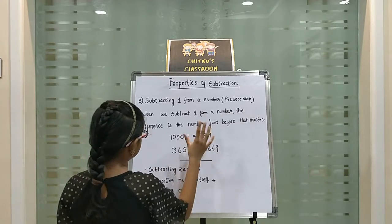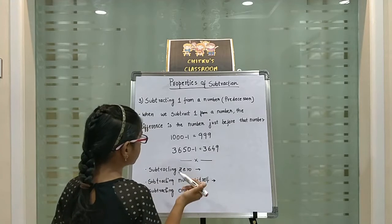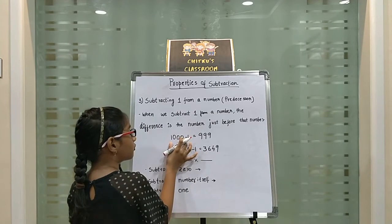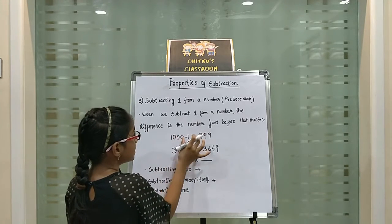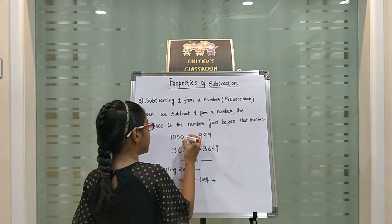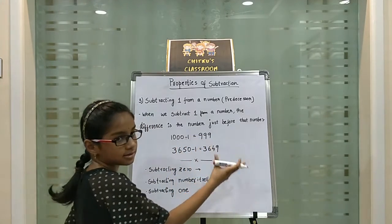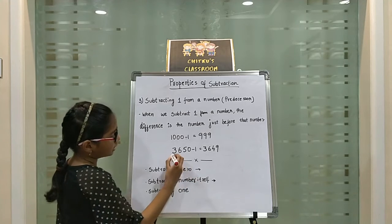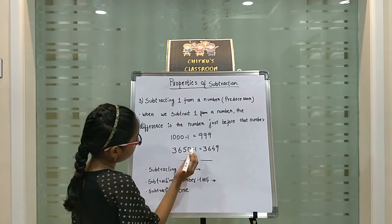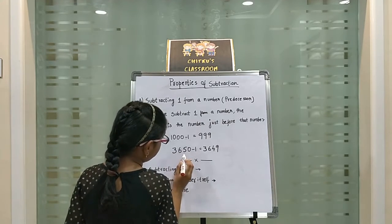The difference will be the number just before that number. So, 1000 minus 1 — what is the predecessor of 1000? It's 999. So, the answer is 999. If we subtract any number minus 1, the answer is the predecessor, the number before that number. 3650 minus 1 is equal to 3649.